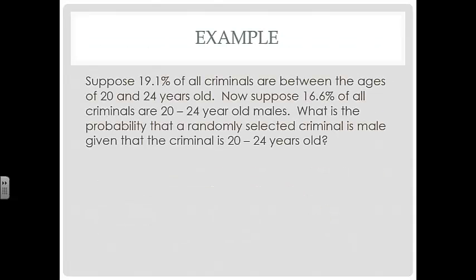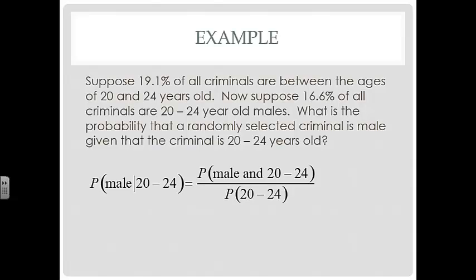Suppose 19.1% of all criminals are between the ages of 20 and 24 years old. Now suppose that 16.6% of all criminals are 20 to 24 year old males. What is the probability that a randomly selected criminal is male given that the criminal is 20 to 24 years old? So we find the probability that they're male and they're 20 to 24 years old, which was 16.6%, and we divide that by the probability that they're 20 to 24 years old, which was 19.1%, and we get about 86.9%.